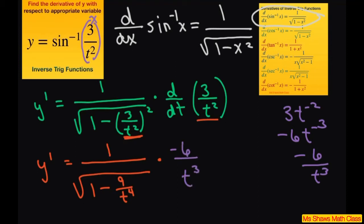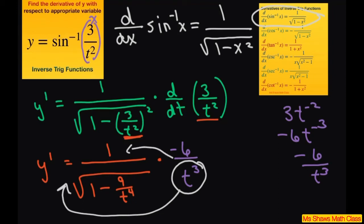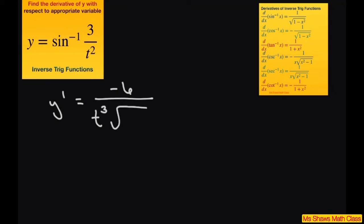Now I'm going to move the t cubed in front and multiply negative 6 times 1. That gives us y prime equals negative 6 divided by t cubed times the square root of 1 minus 9 over t to the fourth.